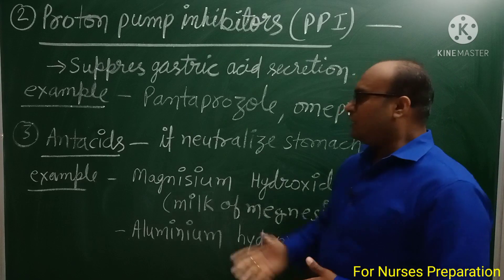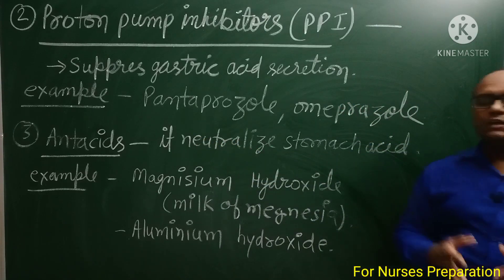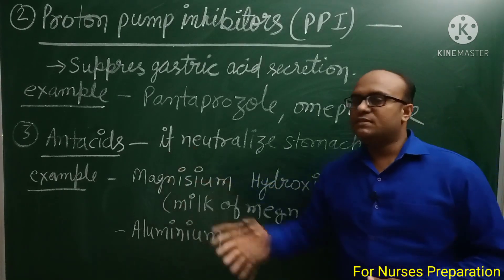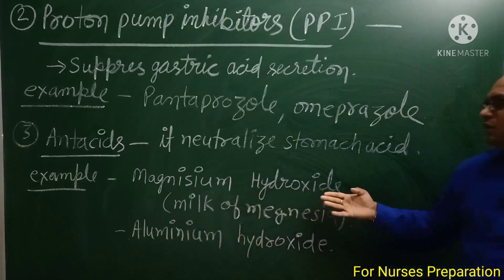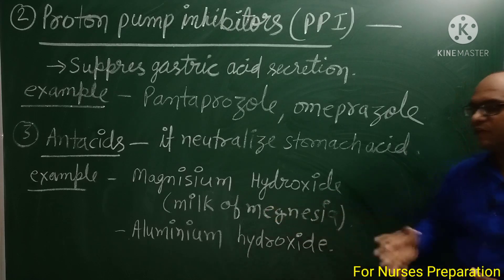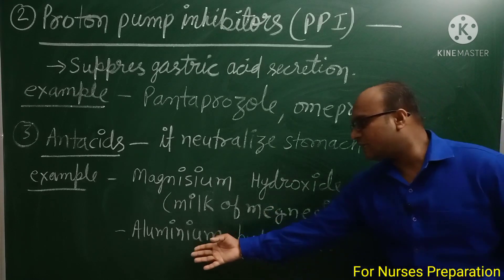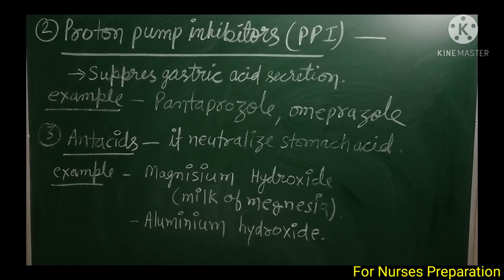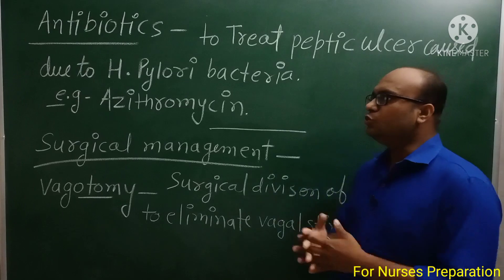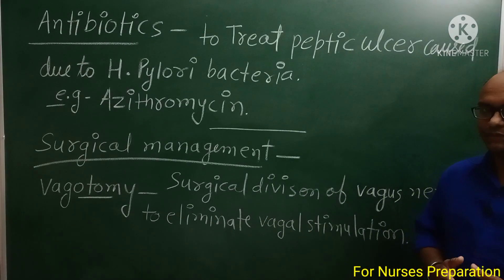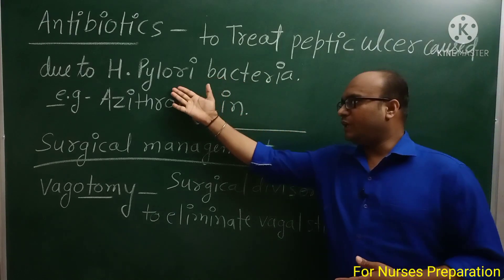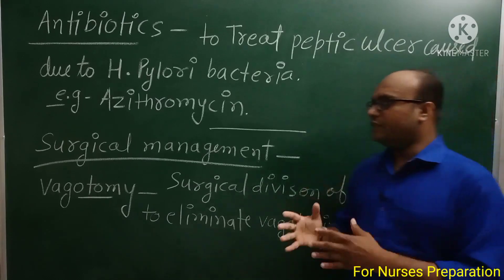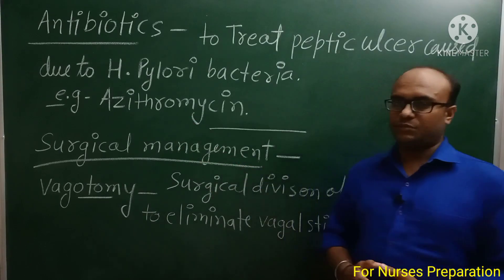Next drug class है antacids। It neutralizes stomach acid। Stomach के अंदर पहले से मौजूद acid को neutralize करने के लिए antacids दिए जाते हैं। Examples हैं: magnesium hydroxide (जिसे milk of magnesia भी कहते हैं) और aluminium hydroxide। Next है antibiotic therapy — Helicobacter pylori bacteria के द्वारा होने वाले peptic ulcer को treat करने के लिए azithromycin medicine का इस्तेमाल किया जाता है।